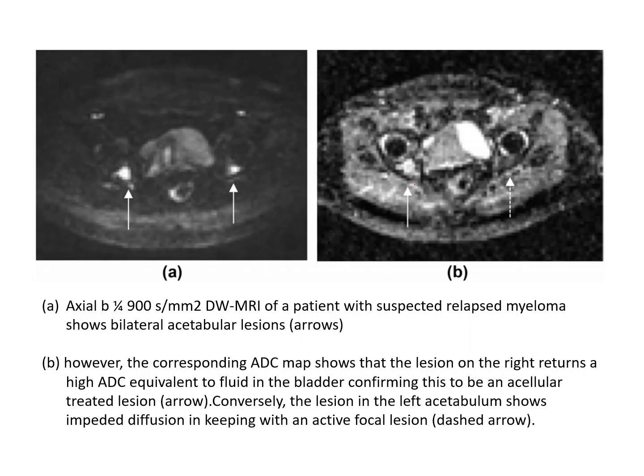This illustrates the importance of diffusion weighted images. On the right side, the right-sided acetabular lesion is hyperintense on DWI but remains hyperintense on the ADC map — meaning this is not true restriction. On the left side, the lesion is hypointense on the ADC map, confirming true restriction, meaning it is an active focal lesion as compared to the previously treated, acellular lesion on the right. This distinction is very important clinically.